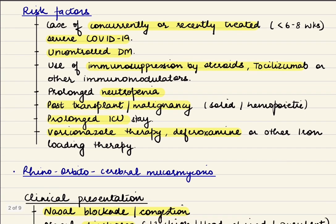What are the risk factors? Concurrently or recently treated severe COVID-19, meaning a patient can develop this during COVID-19 or after just recovering within 6 to 8 weeks. Also, uncontrolled diabetes mellitus or use of immunosuppressive drugs such as steroids, tocilizumab, or other immunomodulators.